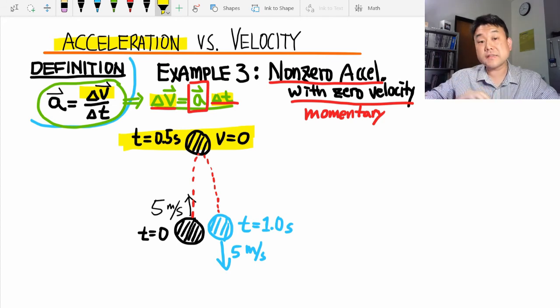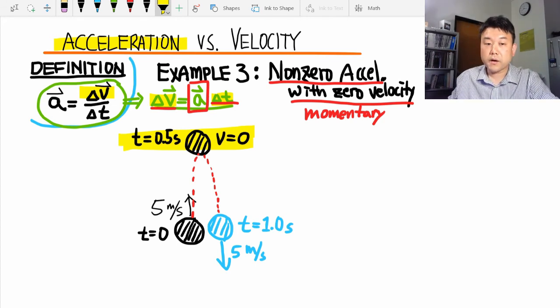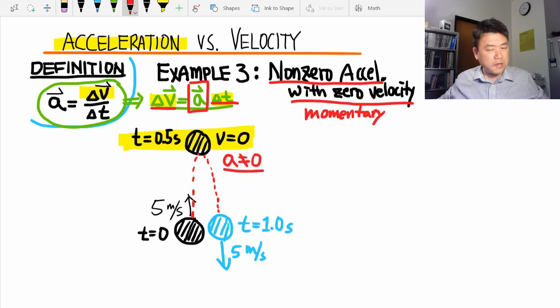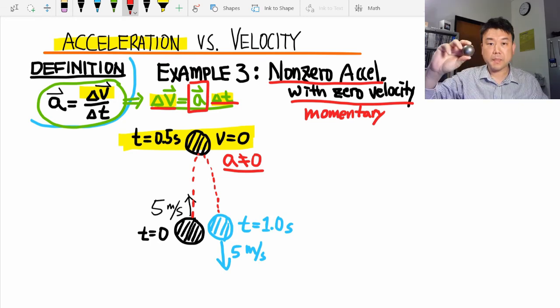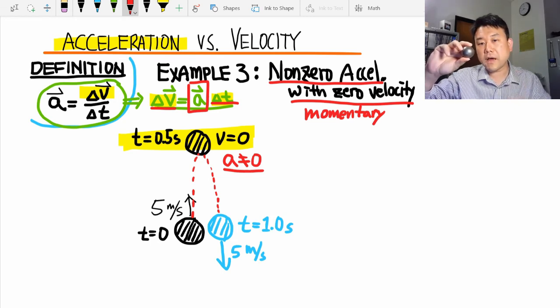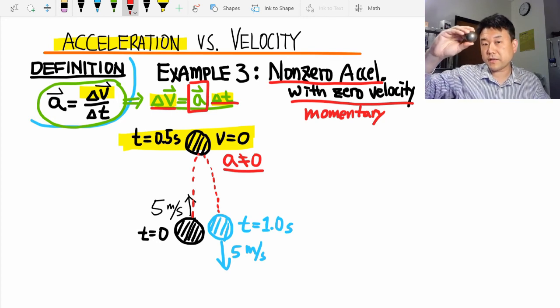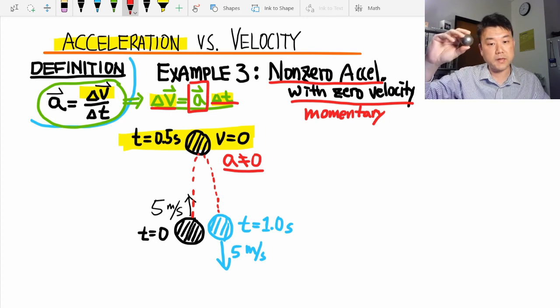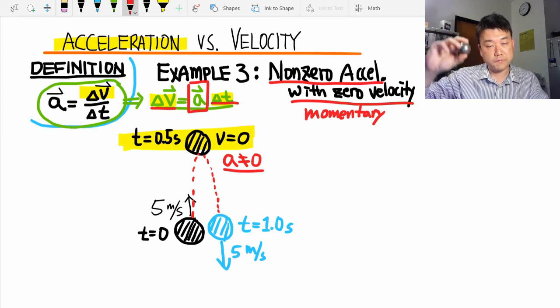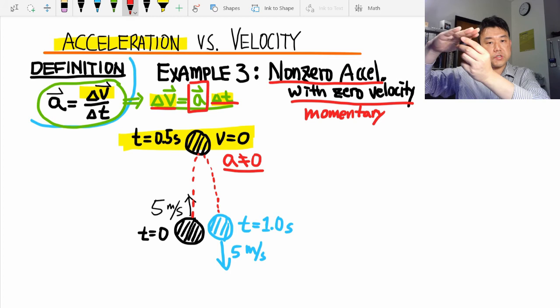And I'm saying that this is an example where acceleration is not zero. Now, how do I know that acceleration is not zero at the top? Maybe it's zero, like velocity was zero. Well, here's how I can argue that the acceleration at the very top is not zero, even though velocity is zero. It's because of the change of velocity. The moment before it reached the top, the ball was moving upward. So it had a positive velocity. And the moment after reaching the top, the ball will be moving downward. So it has negative velocity.